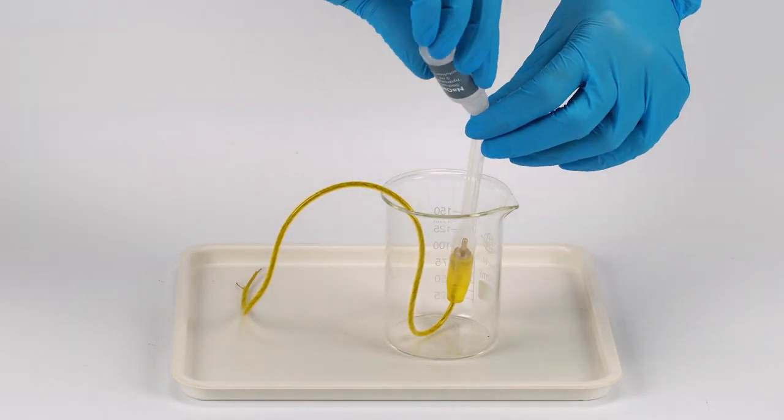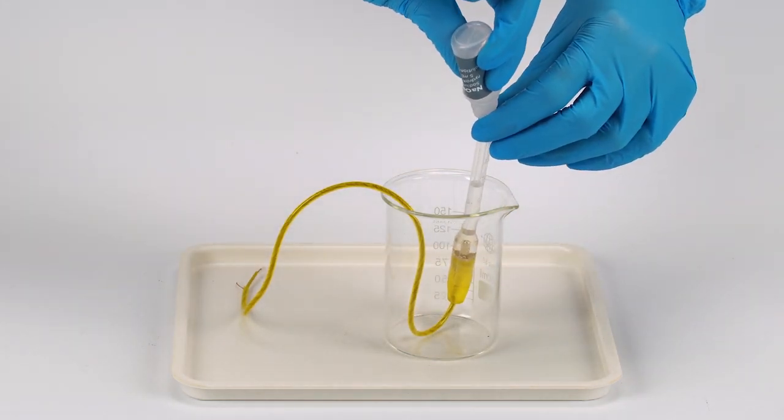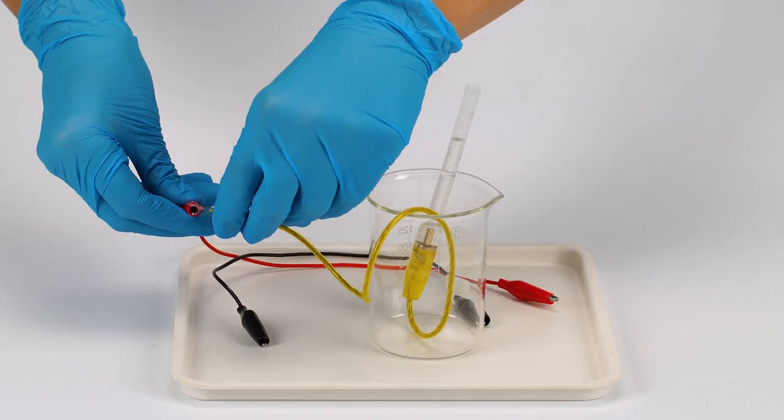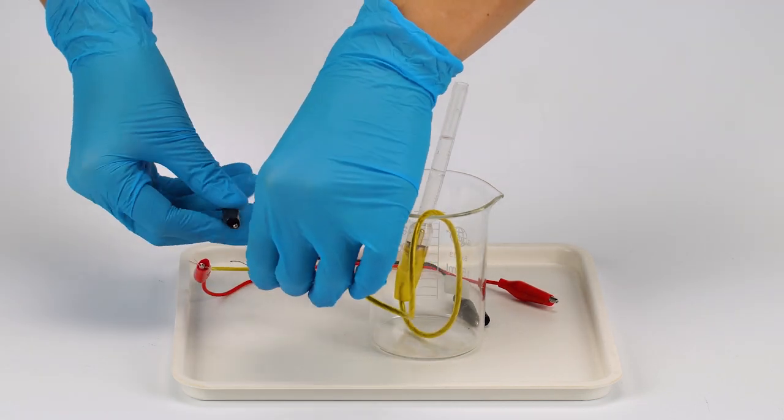Fill the pipette halfway with sodium hydroxide NaOH solution. Hook up the crocodile clips, the red clip to the longer wire, and the black clip to the shorter wire.